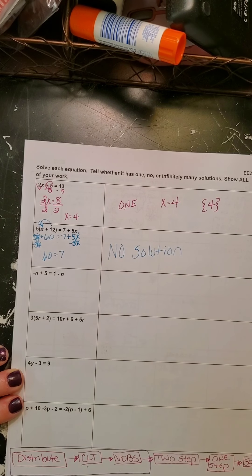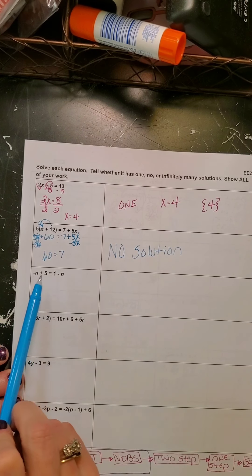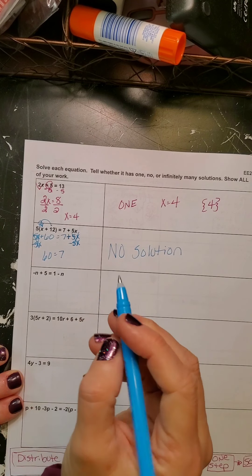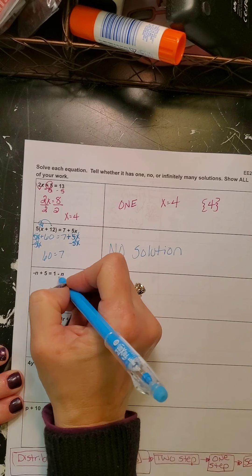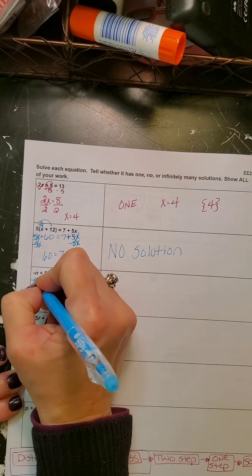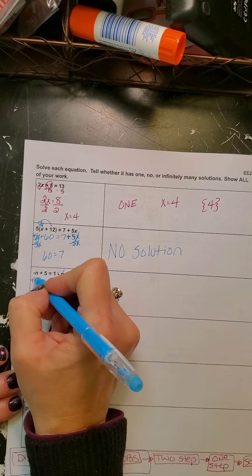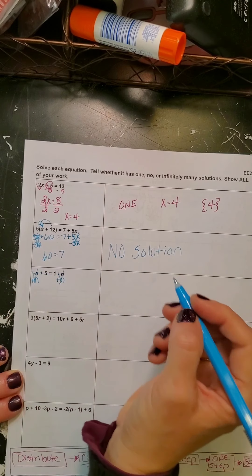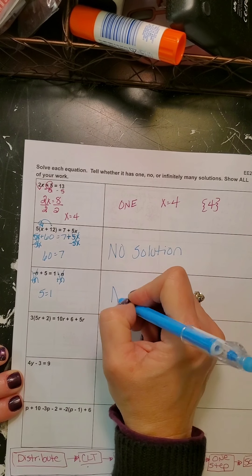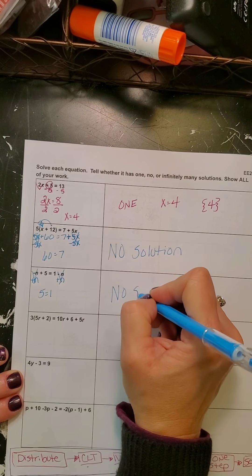Here, I have no distributive on either side and no combining like terms on either side, but I do have variables on both sides. Let's move the variable over and zero it out — it's going to zero out on both sides, so I get 5 equals 1, which is no solution.